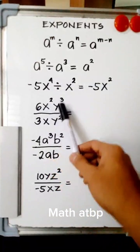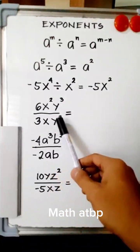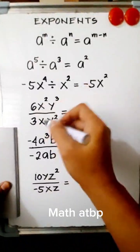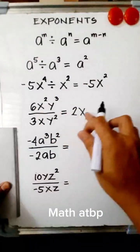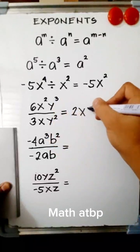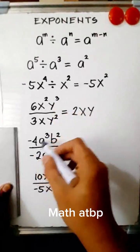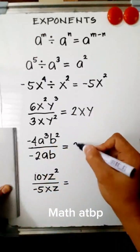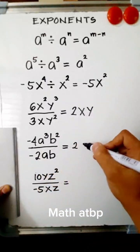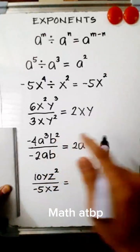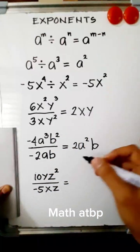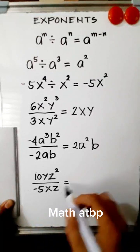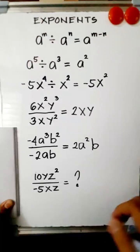We have 6x squared y cubed divided by 3xy squared: 6 divided by 3 is 2, x squared divided by x is x, and y cubed divided by y squared is y — giving 2xy. Next, negative 4a cubed b squared divided by negative 2ab: negative 4 divided by 2 is 2, a cubed divided by a is a squared, b squared divided by b is b. Finally, we have 10yz squared divided by negative 5xz — can you evaluate this?